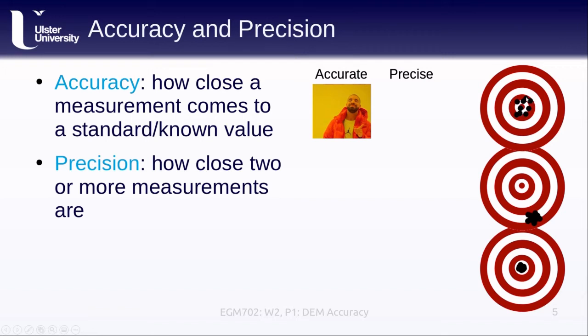You notice though that they're not very tightly clustered. We see a lot of spread in the data. So even though they all come fairly close to the center, they're not very precise. We're not very sure how close we can actually get to the target based on what we've thrown here. So we would say these are not precise.